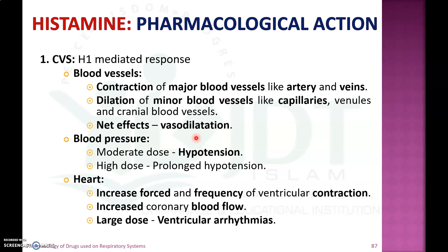The pharmacological actions of histamine in the cardiovascular system: H1-mediated responses in blood vessels produce contraction of major blood vessels like arteries and veins, and dilation of minor vessels like capillaries. The net effect is vasodilation. Moderate doses produce hypotension; high doses produce prolonged hypertension. In the heart, histamine increases force and frequency of ventricular contraction and increases coronary blood flow. In large doses, it produces ventricular arrhythmia.